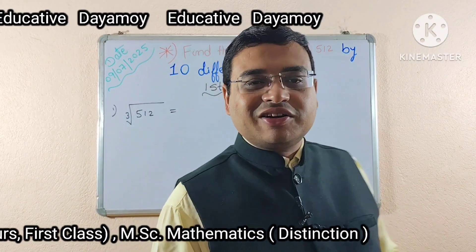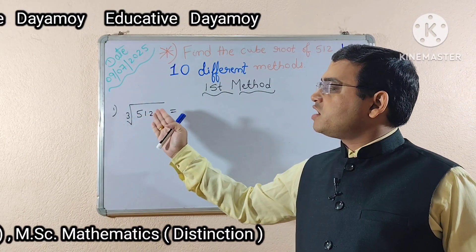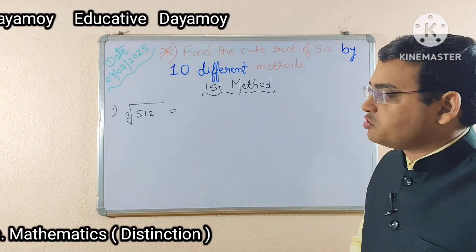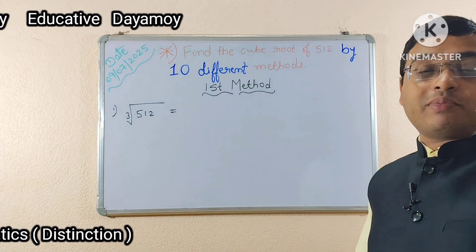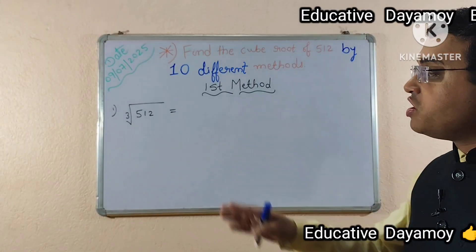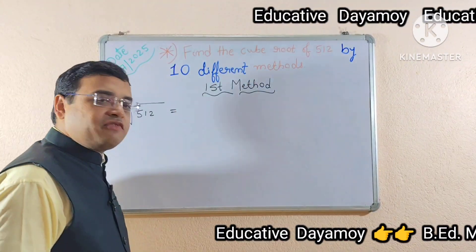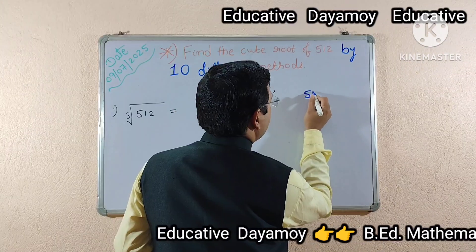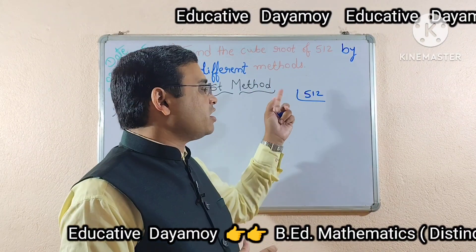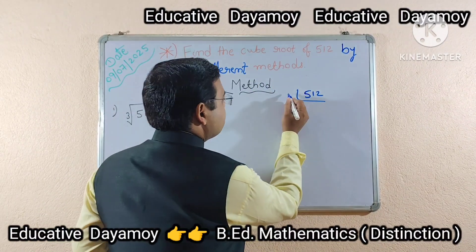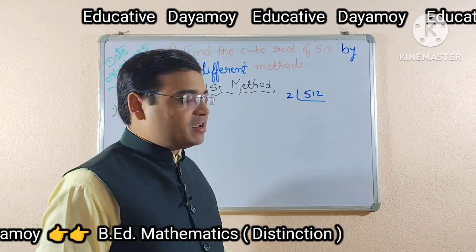In the first method, the cube root is written and inside the cube root 512 is written. Here in this first method, what I have to do first is the prime factorization of 512. So let's do the prime factorization of 512. The number which I will take here will be 2, as 2 is a prime number and I am doing prime factorization.